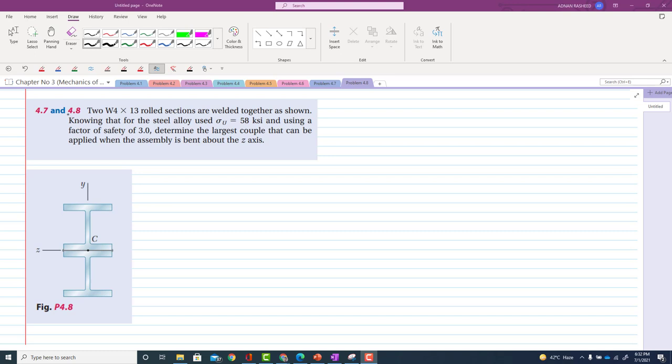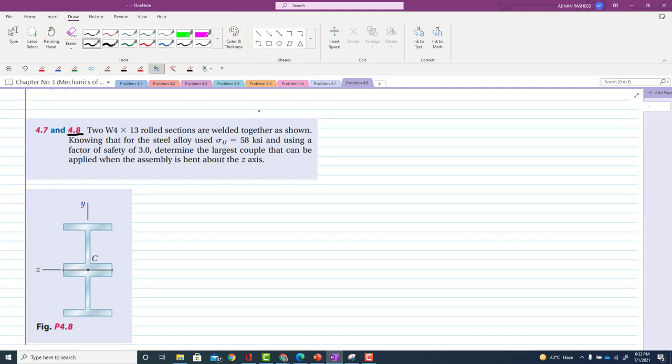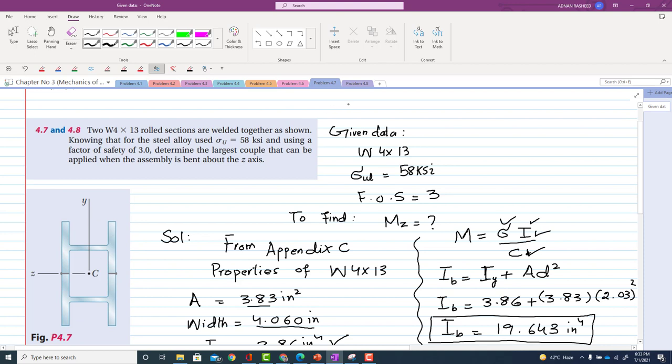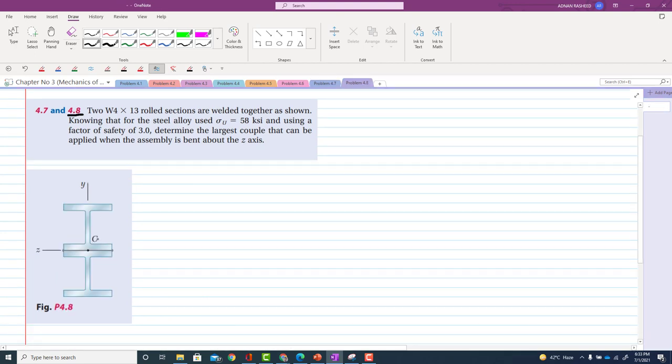Problem 4.8 has the same statement as the previous problem, but now the welded flanges are different. In the previous problem, the wide flange beams were welded like that, but now the beams are welded end to end.